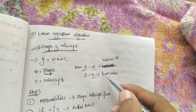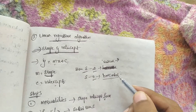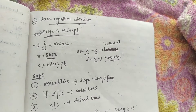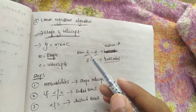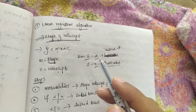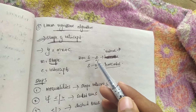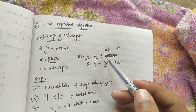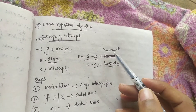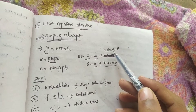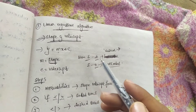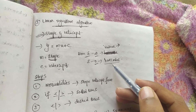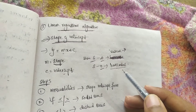To repeat: if the slope value is infinity, the graph will be in a vertical shape, and when the slope value is zero, the graph will be in a horizontal shape.